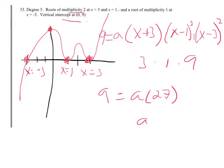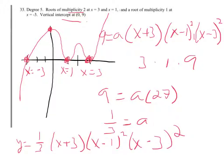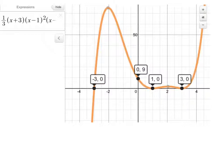So I'm thinking it's 1 third, or f of x, or y, equals 1 third times x plus 3 times x minus 1 squared times x minus 3 squared. So I'm looking at the graph of the equation I just wrote. I'm seeing the two zeros, I'm seeing multiplicity 2, I'm seeing a y intercept of 9. I think I did it. So I hope that helps you figure out how to write these.